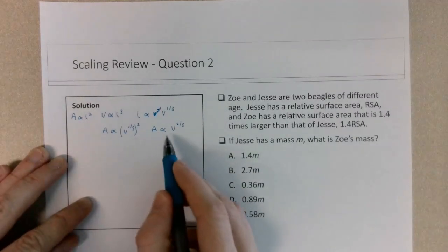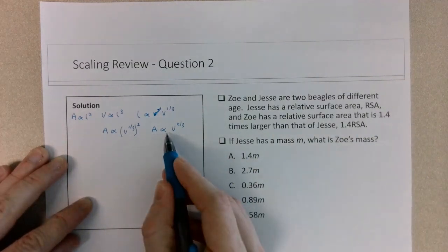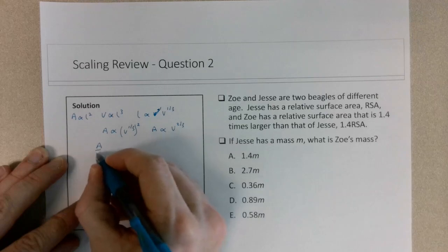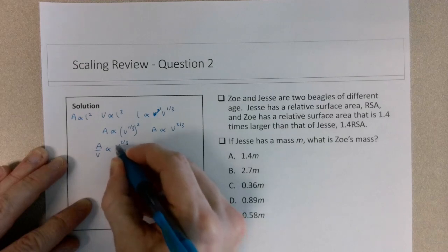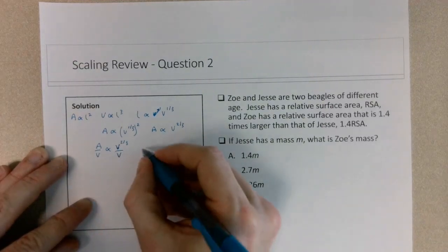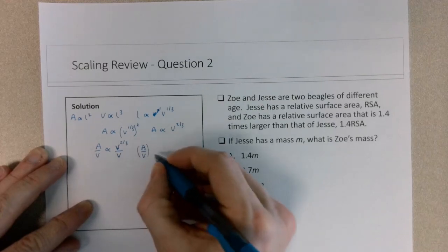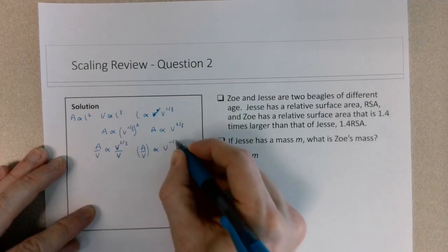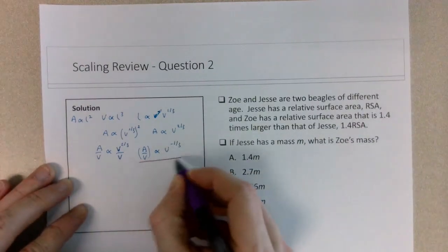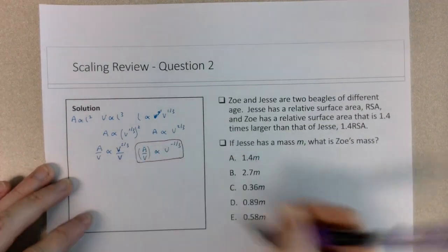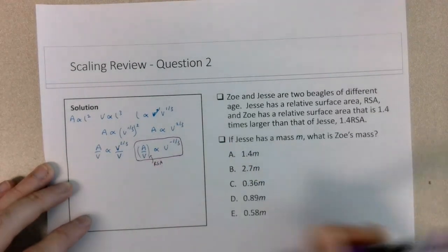And then to get the relative surface area, which just means that it's a surface area relative to the volume, I divide both sides of this expression by V. So A over V scales with volume to the two-thirds divided by V, dividing both sides by V. So that's two-thirds minus one. So the area over volume, which is what we call the relative surface area, scales with volume to the negative one-third. And that's our important expression. This quantity, as we said here, this is what we refer to as the RSA, relative surface area.